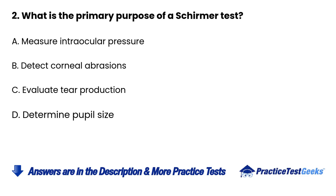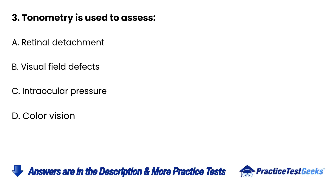2. What is the primary purpose of a Schirmer test? A. Measure intraocular pressure B. Detect corneal abrasions C. Evaluate tear production D. Determine pupil size